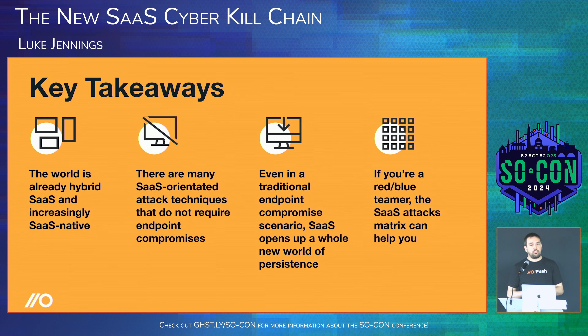The other key takeaway is that there are many SaaS-oriented attack techniques that do not require endpoint compromises. I deliberately focused this research on a no-endpoint-compromise scenario to see what this world looks like. The conclusion is that there are lots of effective tactics and techniques across the whole kill chain that you can use to compromise an entire organization without touching an endpoint.